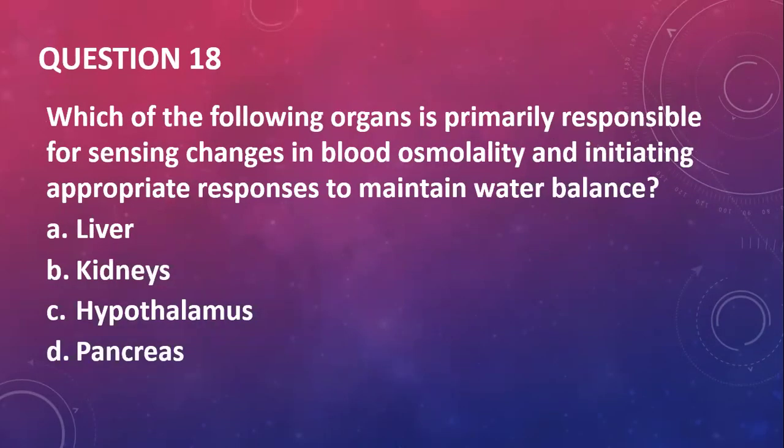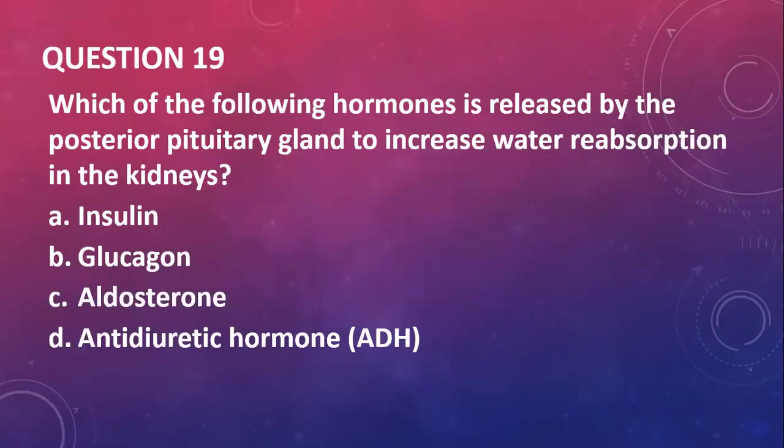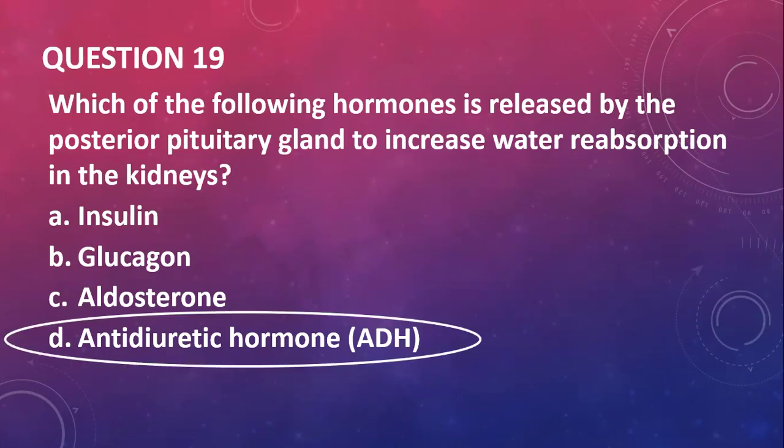Question eighteen: which organ is primarily responsible for sensing changes in blood osmolality in osmoreceptors and initiating appropriate responses to maintain water balance? That will be the brain hypothalamus. Question nineteen: which hormone is released by the posterior pituitary gland to increase water reabsorption in kidneys? We have insulin, glucagon, aldosterone, and antidiuretic hormone. If you said ADH, you are correct.